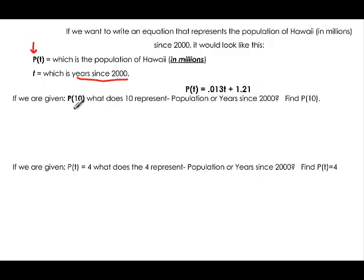If we're given P(10), we have to determine what the 10 represents so that when we finish, we know what we found. The 10 is inside the parentheses, and if you go back to our function notation, t is inside the parentheses. So this 10 must be years since 2000.